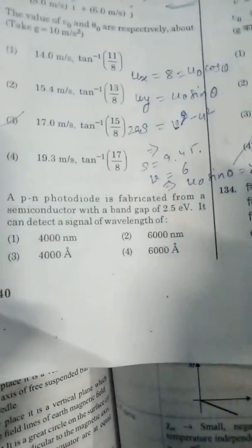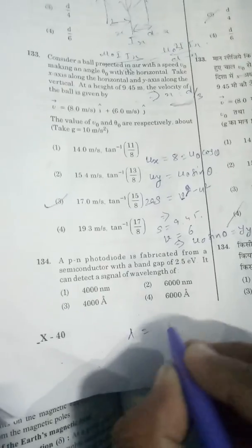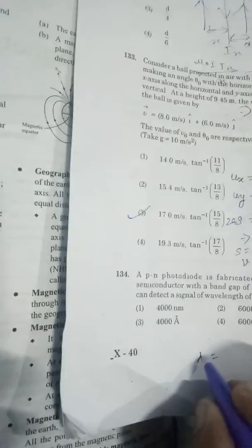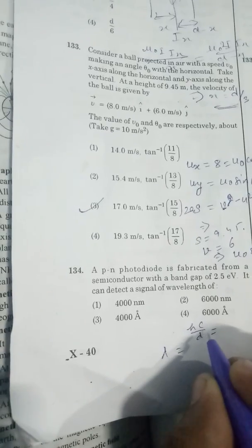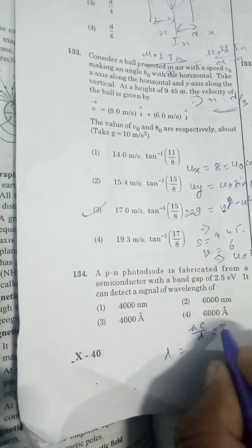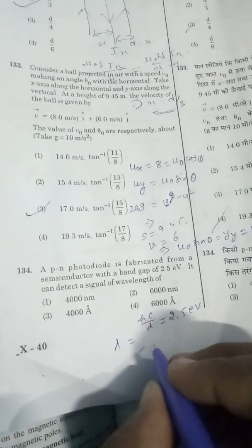In the P-N junction diode, we find the band gap energy and the wavelength. Lambda is equal to hc by E. E is equal to h nu, so E is 2.5 electron volts. So lambda equals hc divided by E.